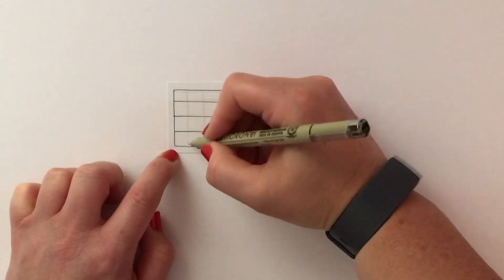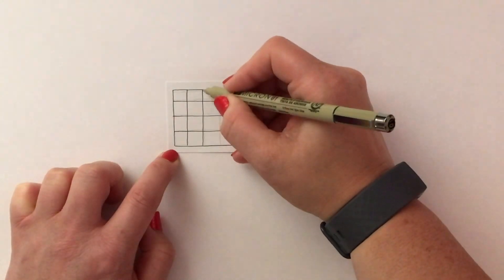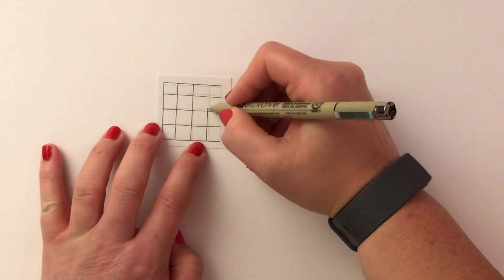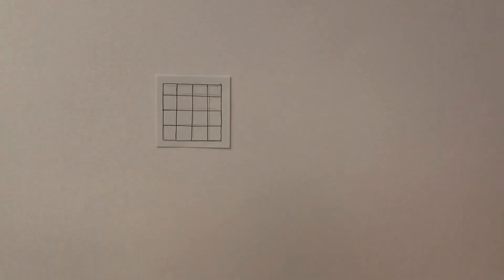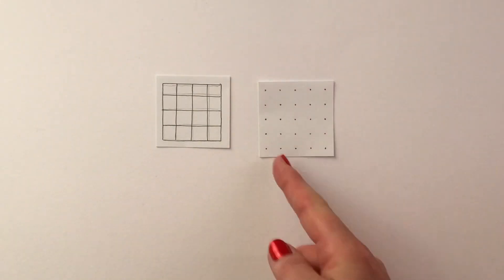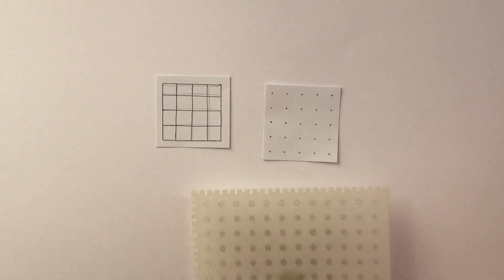For those of you that have dexterity issues or are a little bit younger, sometimes I actually use the dotty tool stencil to set it up and then I would draw the lines down, and then that way I can ensure that each of the lines are going to be equal distance apart.